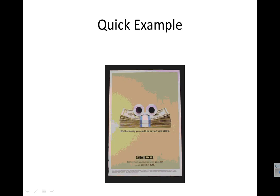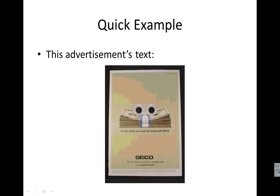Everyone might have a different subtext. Here's a quick example. The text of this advertisement would be exactly what you see. You don't hear anything because it's just a magazine advertisement. What we see is a stack of money on a light brown background. The money is bound with money wrapper papers, and it has two googly eyes on it. There's text saying it's the money you could be saving with GEICO, and there's also the GEICO logo and advertisements below it.